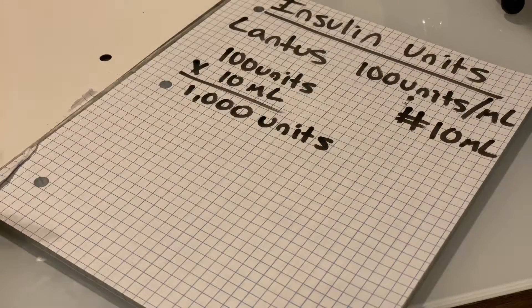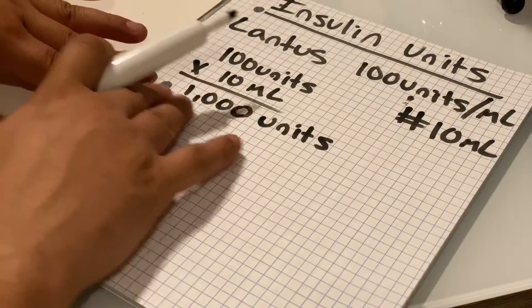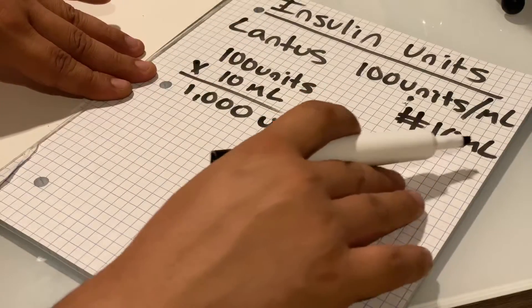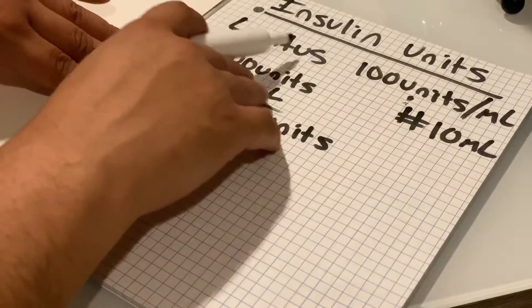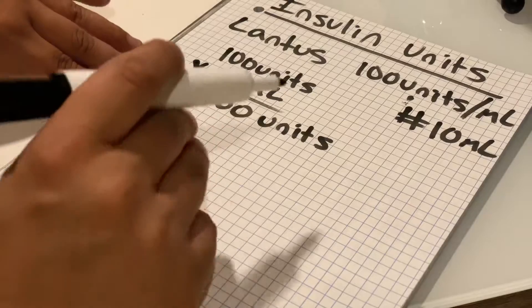So we know right off the bat, this is how many units we have total to dispense with this strength. If we're giving 10 milliliters times 100 units per milliliter, because that's the strength of Lantus, we know we have 1,000 units.